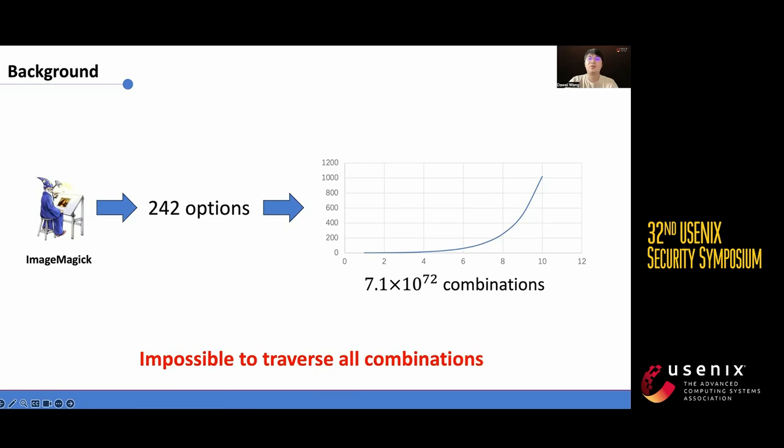Testing all option-related paths is challenging due to the substantial number of options in large-scale programs like ImageMagick, which has 242 distinct options. Additionally, the interactions between these options lead to a vast number of unique paths,